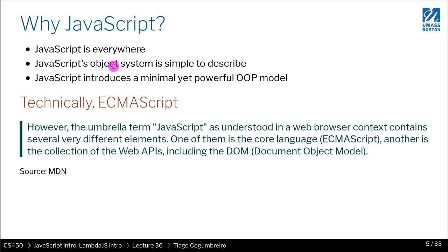There's one very nice thing about JavaScript, in my opinion, which is not just its accessibility — any browser has JavaScript, you can program basically anywhere. But also it has a very elegant object system, in my opinion. I hope you will appreciate that in this course. It is very minimal, yet very powerful, and it is able to represent most popular object-oriented programming patterns.